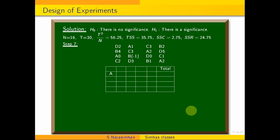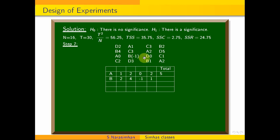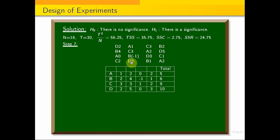We apply 4 treatment methods. For method A: values are 1, 2, 0, 2, giving a total of 5. For method B: values are 2, 4, minus 1, 1, giving a total of 6. For method C: values are 3, 3, 1, 2, giving a total of 9. For method D: values are 2, 5, 0, 3, giving a total of 10.